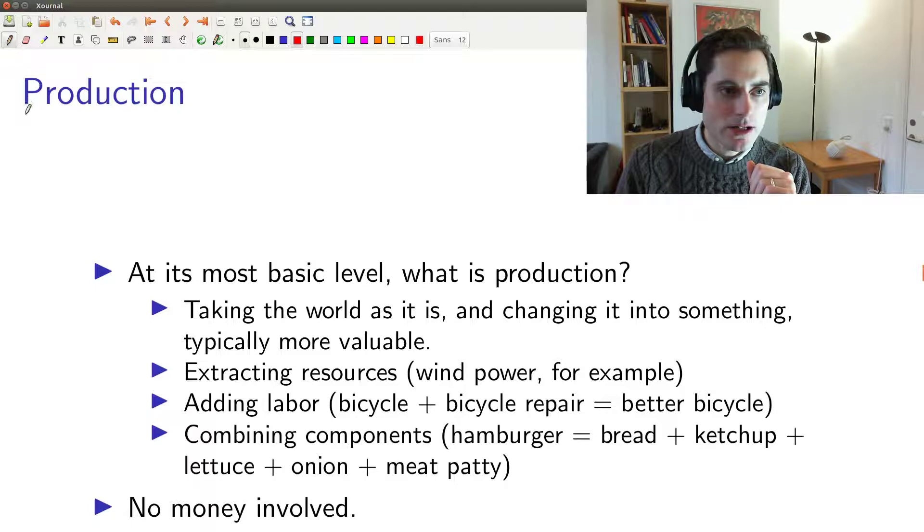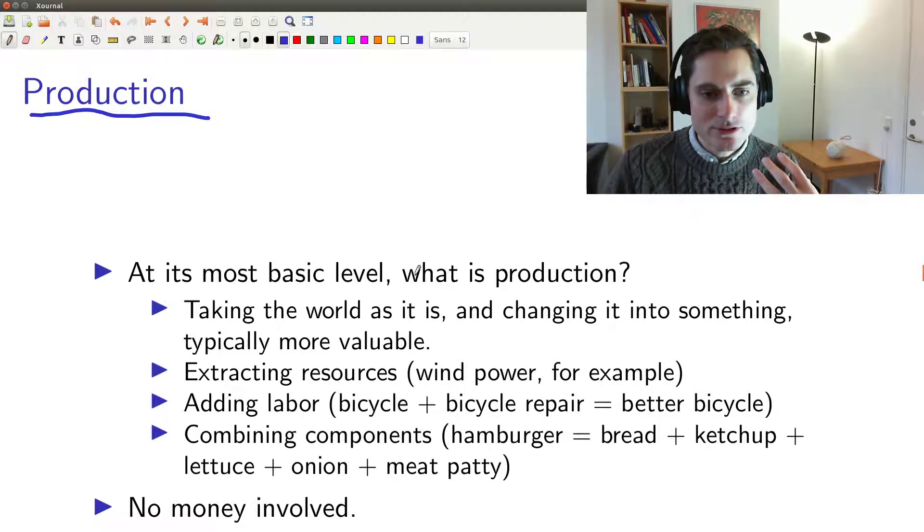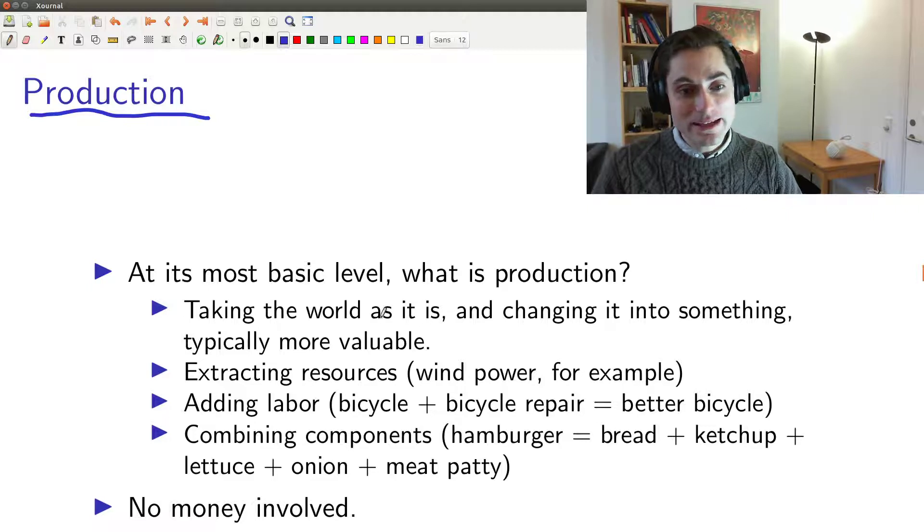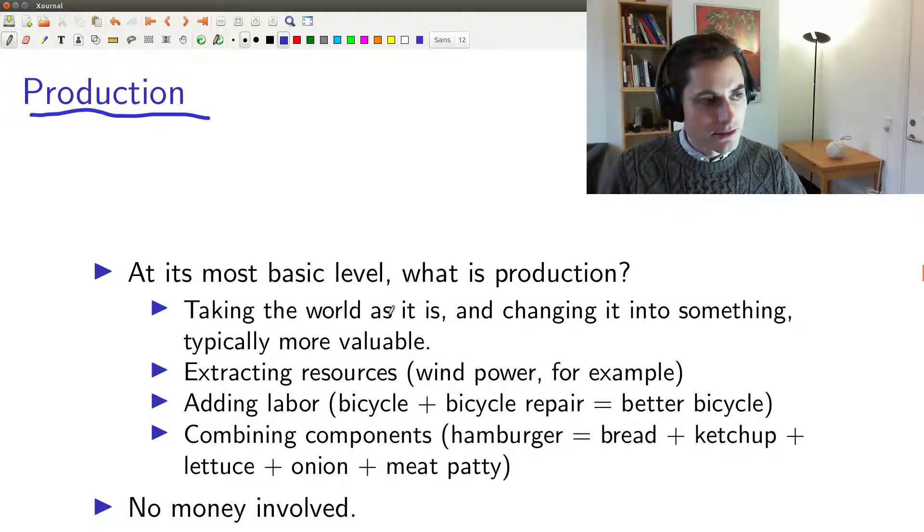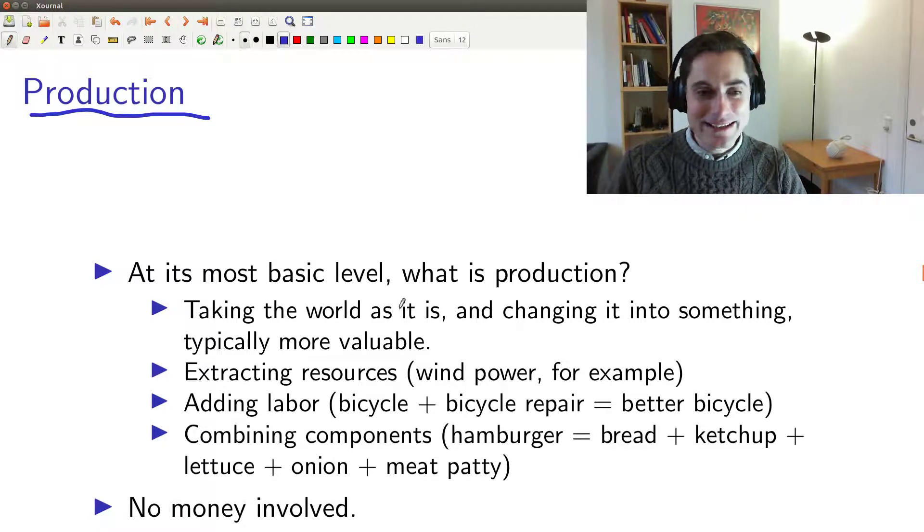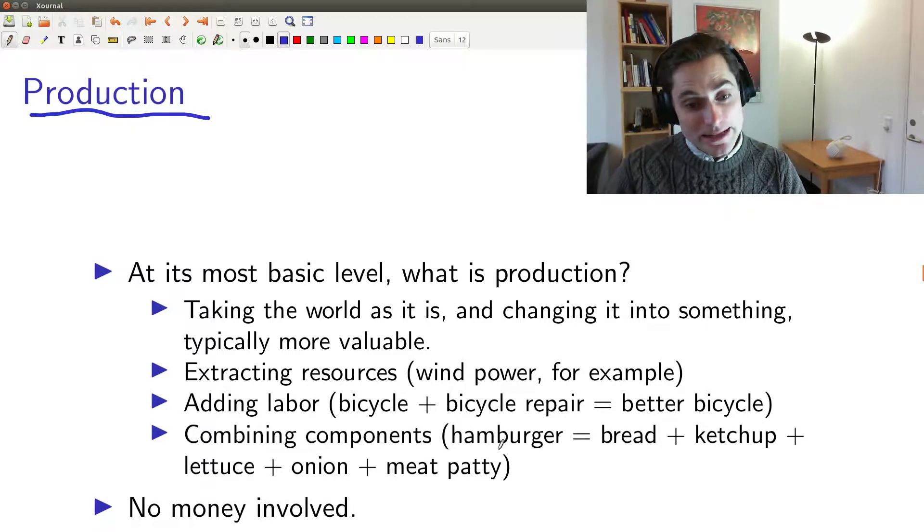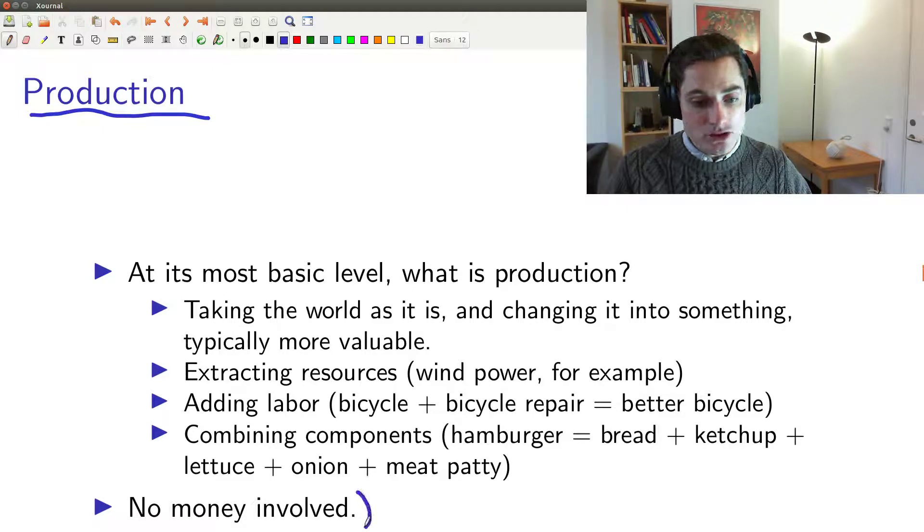Let's think about production at its most basic level. What do we do when we produce? Well, we take the world as it is - there's a certain amount of resources in the world - and we're going to do something to that world. We're going to change something to make it more valuable. You might take a tree and you might chop it down and turn it into toothpicks. So a tree is valuable by itself - it's very nice to look at - but toothpicks arguably are more valuable because we can use them for something. Production can also be extracting resources, just reading off the slide here, adding labor to something - so a bicycle plus bicycle repair makes it a better bicycle - or combining different components. So a hamburger is equal to bread, ketchup, lettuce, onion, and meat patty, and the combination of those things together is worth more than each of those components by itself. So that's production, and notice that there's no money involved. We don't need to reference money to talk about what production is.